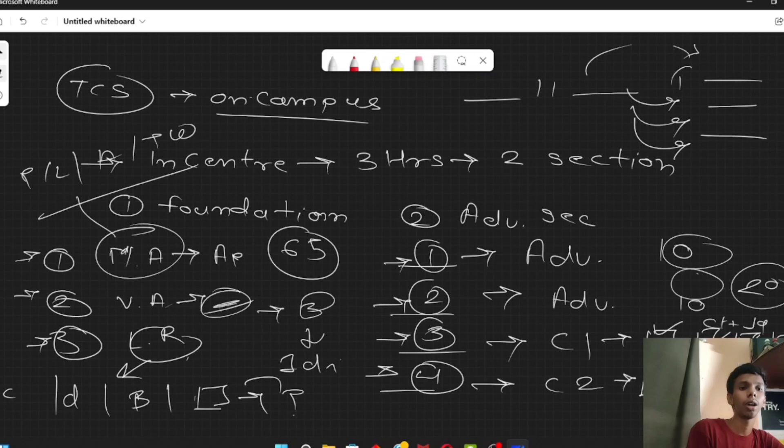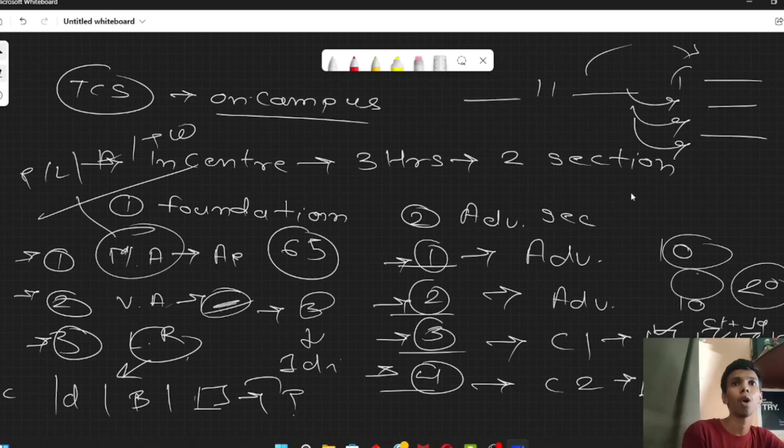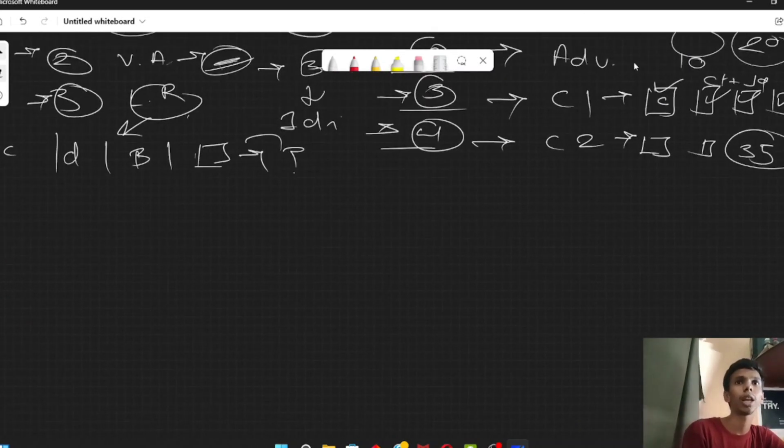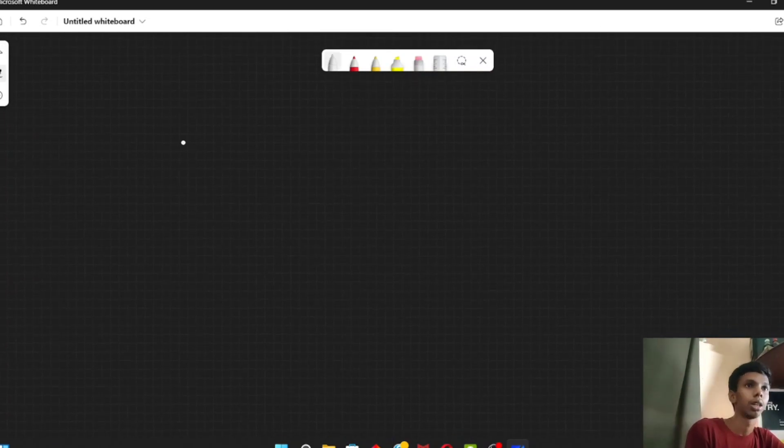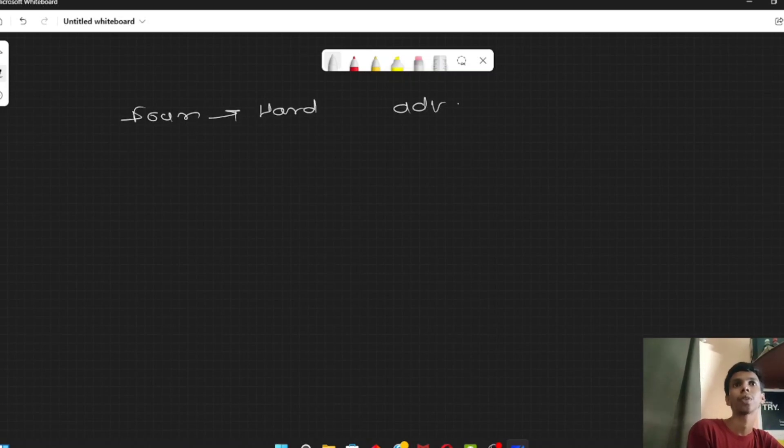So, this is the question pattern. And the paper was mostly moderate, not easy and not hard. It seemed like the foundation level questions were more hard. In the advanced section, almost 6-7 questions were easy and 3 questions were hard.